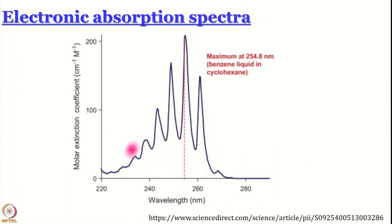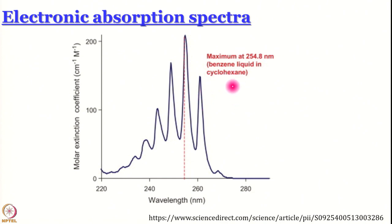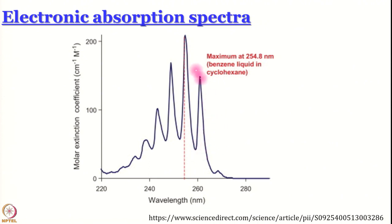This here is an absorption spectrum of benzene dissolved in cyclohexane — an aromatic compound dissolved in a non-aromatic organic solvent. Since it is benzene, you might well understand that the transitions you see are pi-pi* transitions, because benzene does not have a nitrogen atom or oxygen atom or any such thing.